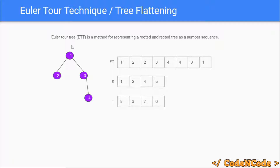The Euler tour technique is simply a representation of a rooted tree — so the tree must be rooted. Even if the root is not specified in the problem, you can choose a random node as the root and proceed. Most problems allow this, and if the choice of root affects the problem, they will mention which node is the root.